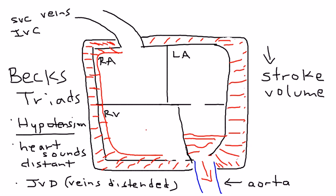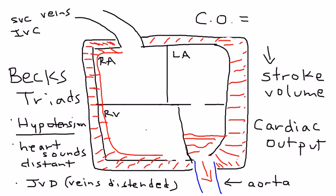Stroke volume is directly tied to cardiac output. Remember the equation: cardiac output equals stroke volume times heart rate. So when stroke volume goes down, so does cardiac output. When cardiac output goes down, less blood is pumped into the aorta and into the circulation, which means the pressure of the blood in the circulation is lower — and that's why you get low blood pressure.